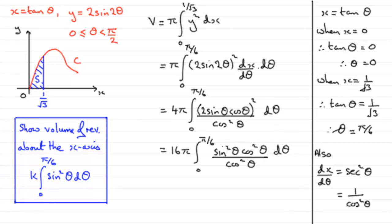So, can you see we've got the cos squared thetas now cancel because they're common factors. So, what we end up with is that this equals 16 pi times the integral from 0 to pi upon 6 sine squared theta d theta.